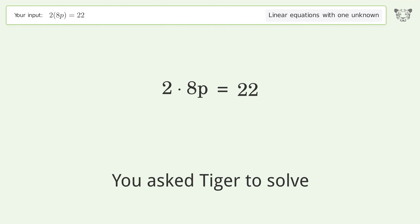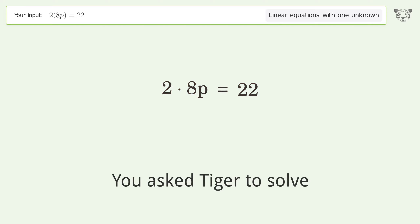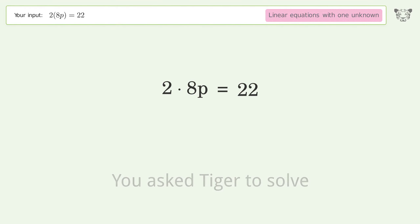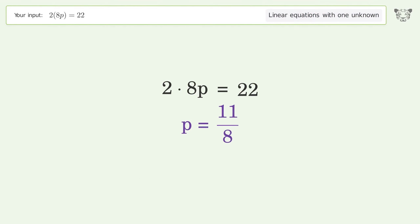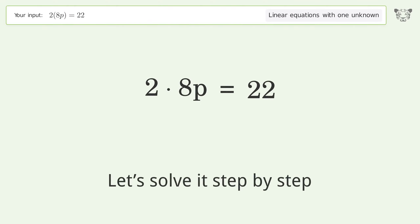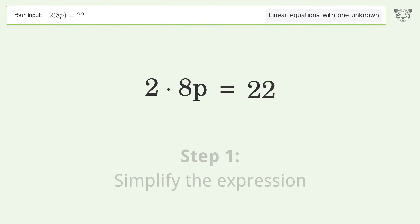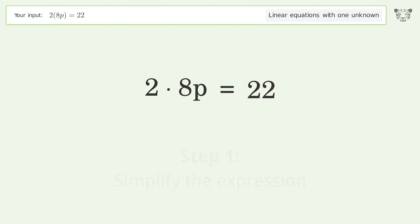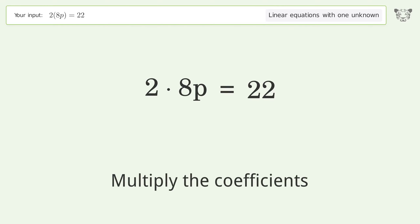Tiger Algebra solves this linear equation with one unknown. The final result is p equals 11 over 8. Let's solve it step by step: simplify the expression and multiply the coefficients.